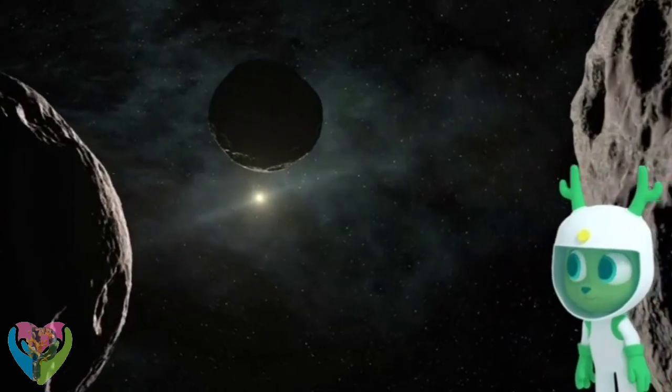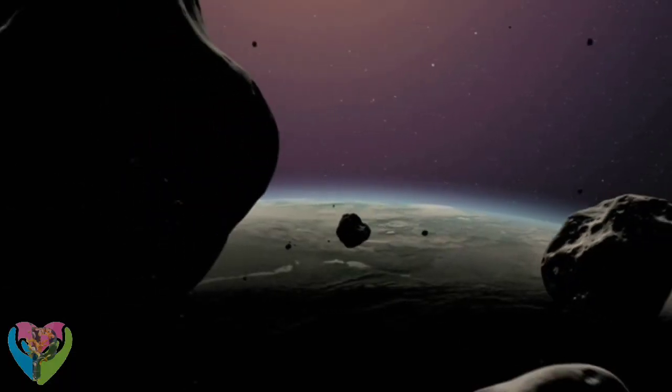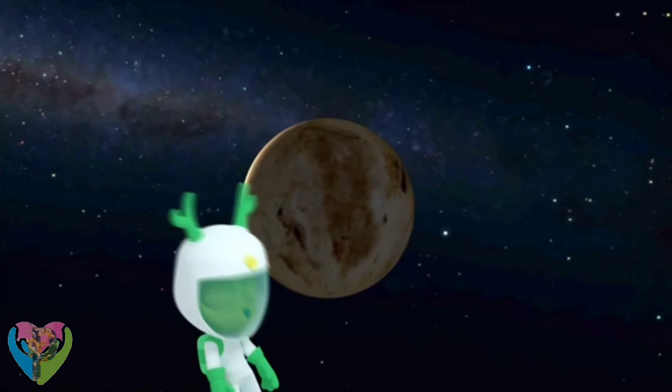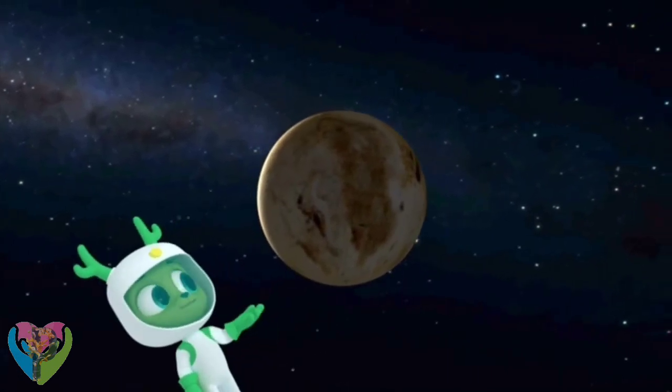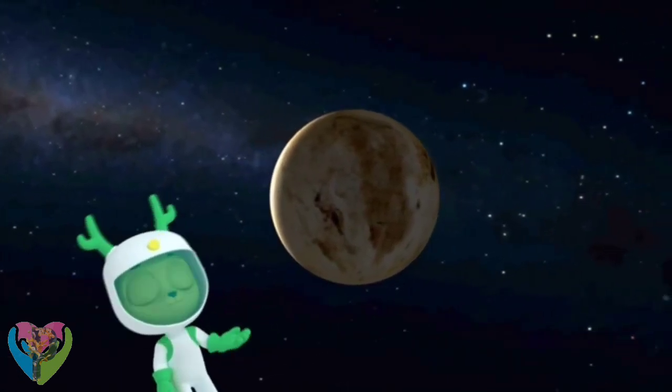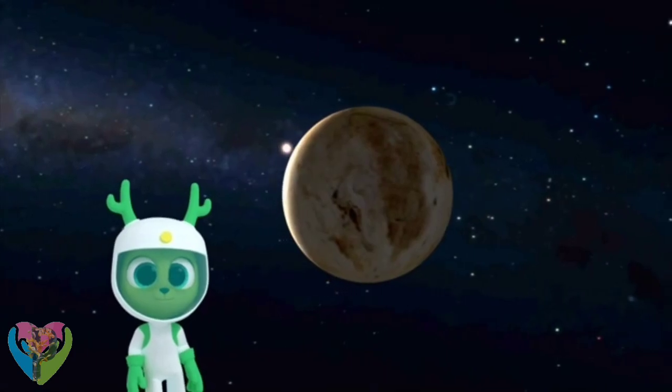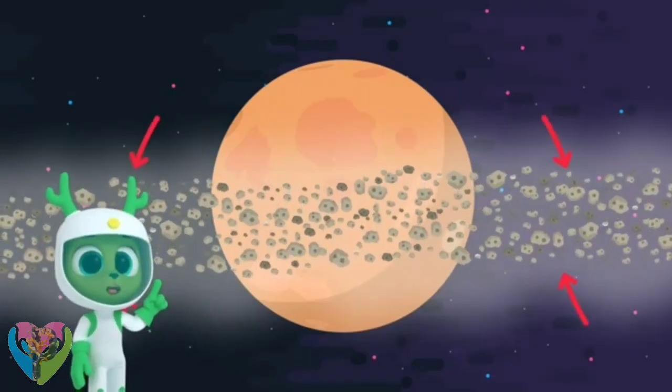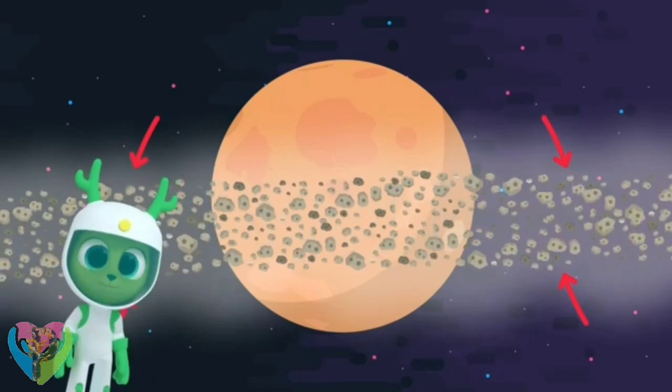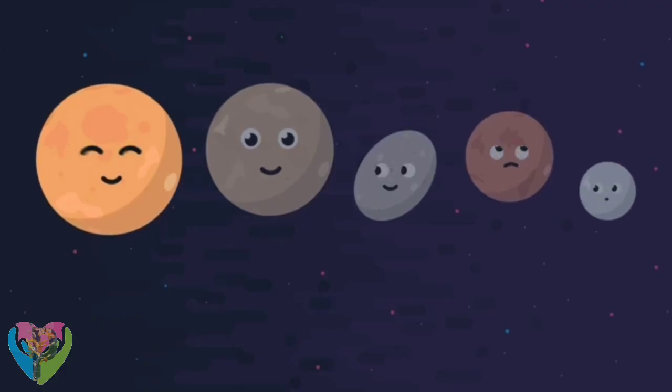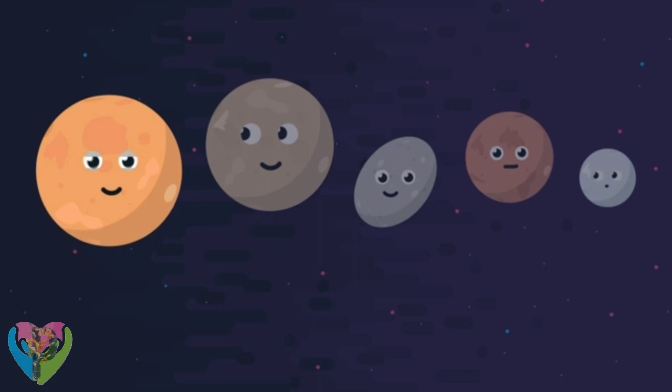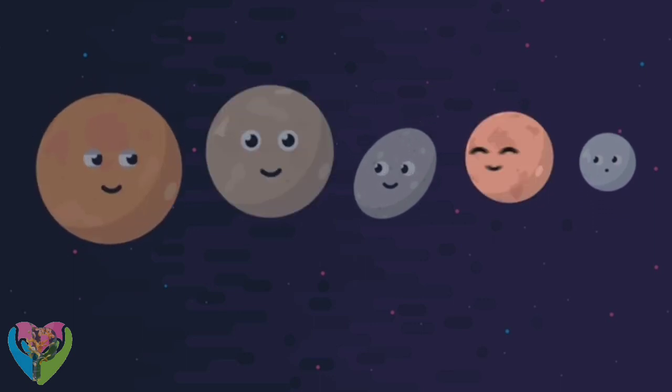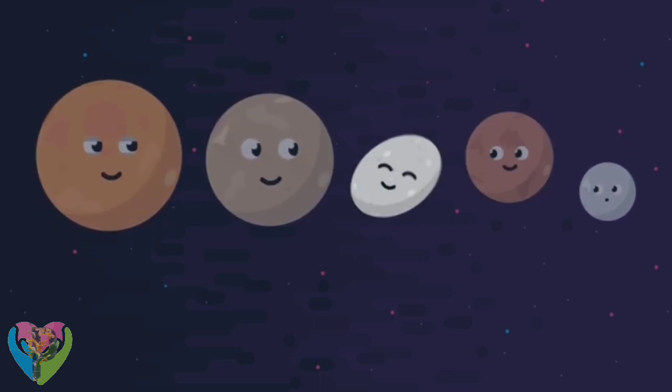Debris is space objects like asteroids, ice, and rocks. Hey! That's Pluto! Pluto is the largest dwarf planet, and it's got debris around it! So Pluto is a dwarf planet. The others are Eris, Makemake, Haumea, and Ceres.